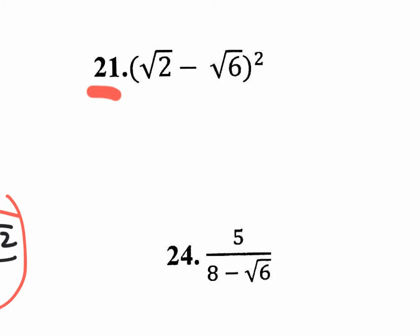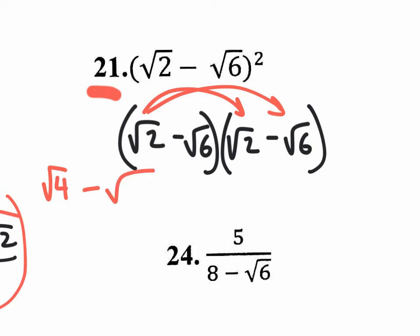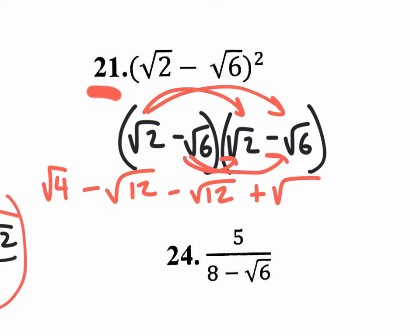Let's jump to number 21. You're going to write it twice because there's nothing to do on the inside of the parentheses — you can't combine radicals that are not alike. You're going to distribute: square root of 2 times square root of 2 is the square root of 4. Square root of 2 times negative square root of 6 is negative square root of 12. Negative square root of 6 times positive square root of 2 is another negative square root of 12. And negative square root of 6 times negative square root of 6 is positive square root of 36.